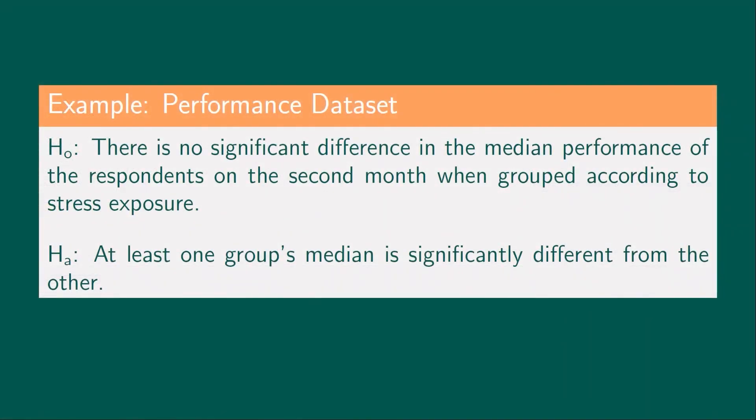Next, we will formulate the null and alternative hypothesis. The null hypothesis is there is no significant difference in the median performance of the respondents on the second month when grouped according to stress exposure. The alternative hypothesis is that at least one group's median is significantly different from the other.